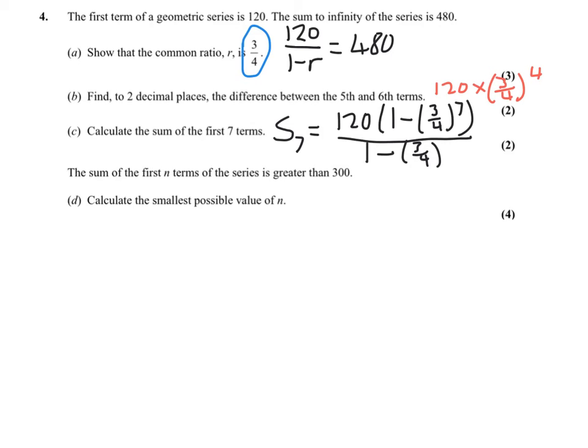It says the sum of the first N terms of the series is greater than 300. Calculate the smallest possible value of N. Well, you're essentially doing this sort of thing: 120 times 1 minus 3 quarters to the power N... and we're going 1 minus 3 quarters, it's greater than 300. Now once you simplify all that, you'll end up with 3 quarters to the power N is greater than or less than something, and you'll have to use some logs. But we'll simplify that and see how you get on.